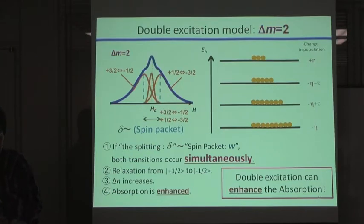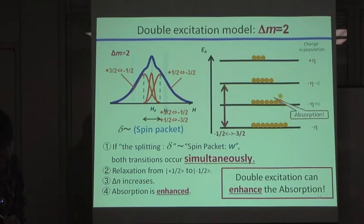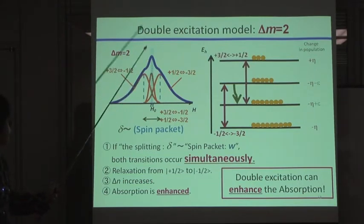if we think about the delta M equal to 2 inter-subband absorption, first, you apply a magnetic field here, only this transition is induced. And if here, only here.